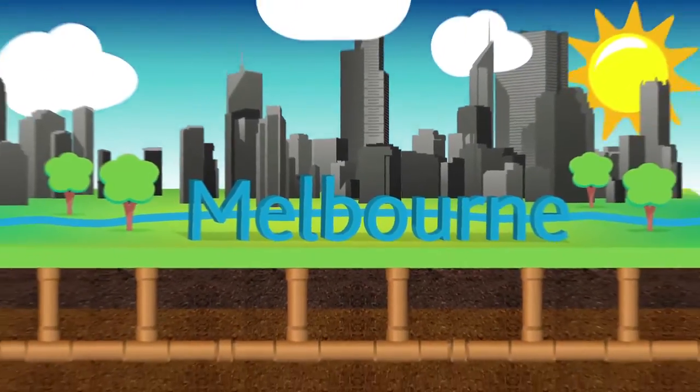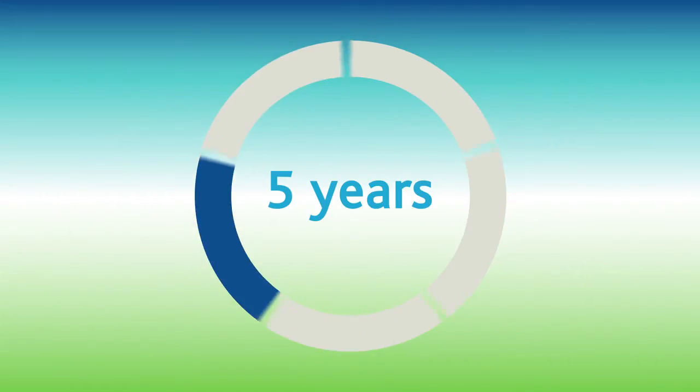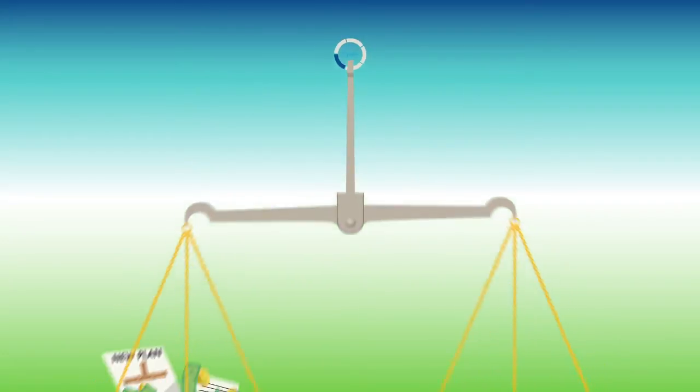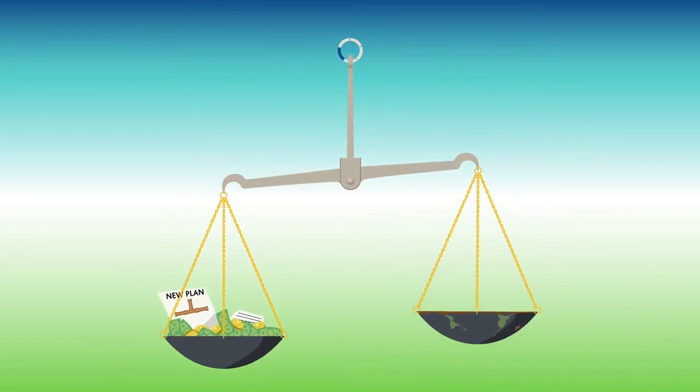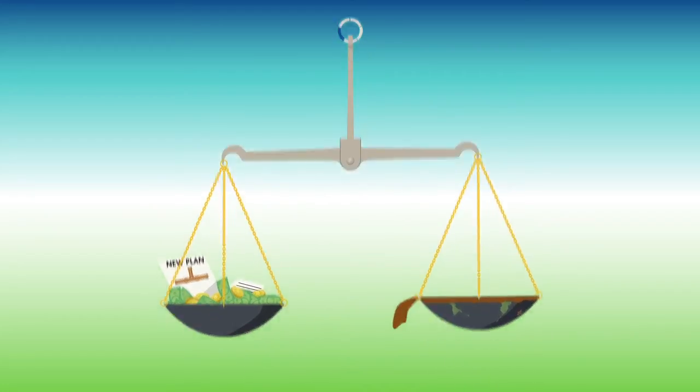Melbourne's sewage network is designed with some extra capacity to handle heavy rain, specifically a large rain that happens on average one in every five years. This was decided by government as the balance point between spending on infrastructure versus the health and environmental impact of an occasional spill.